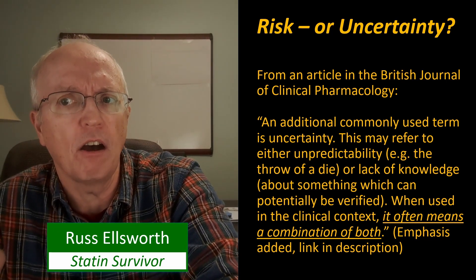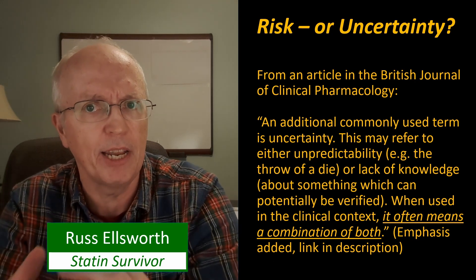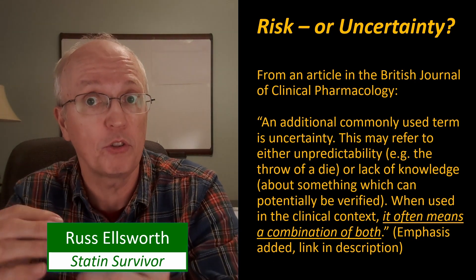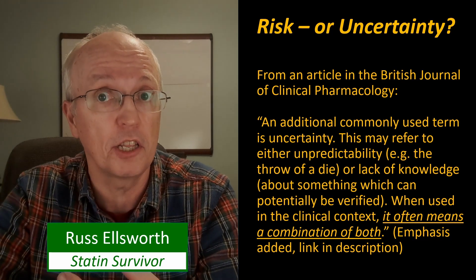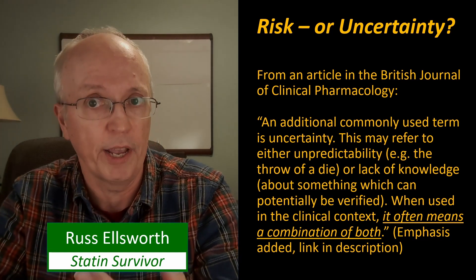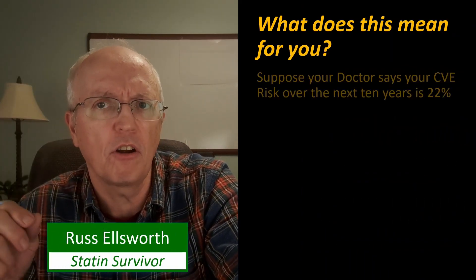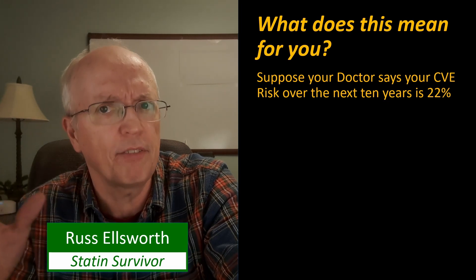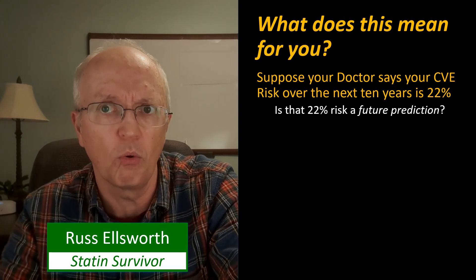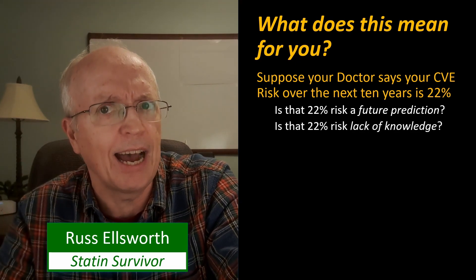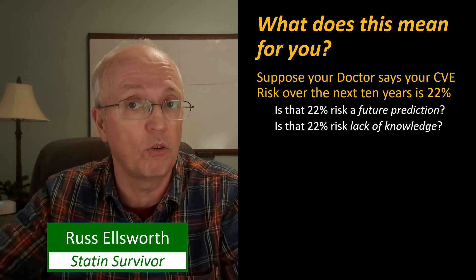When used in the clinical context, it often means a combination of both, and that's kind of the wrench in the works. It starts to get very confusing when you have a combination of these two things. And it gets worse when we're talking about two different probabilities: the risk of a cardiovascular event, and the risk reduction you might get from statin therapy. So suppose your doctor says your cardiovascular event risk over the next 10 years is 22%. We have to ask: is that 22% a future prediction — totally random — or is it just our acknowledgment that we lack knowledge, and if we got more information, the risk might go up or down?